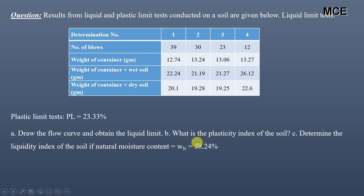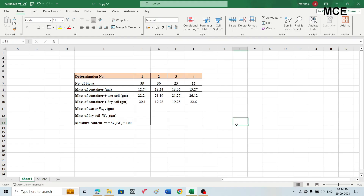We have to draw the flow curve and obtain the liquid limit, find the plasticity index of the soil, and also the liquidity index if the natural moisture content is 38.24%. First we will find the moisture content corresponding to each test number, then draw the flow curve — a graph between number of blows on log scale and moisture content on natural scale. We will do all calculations in Excel.